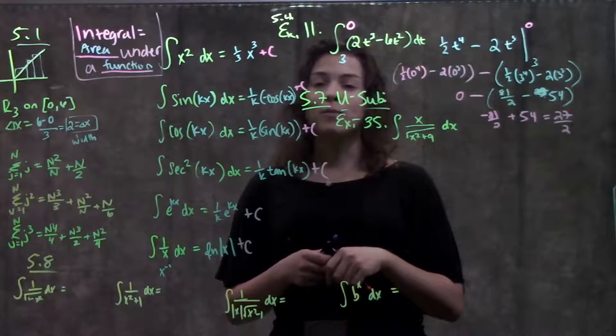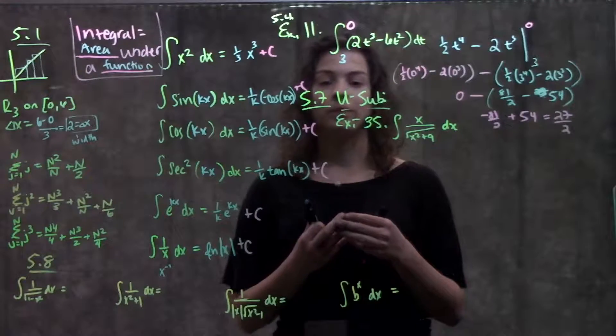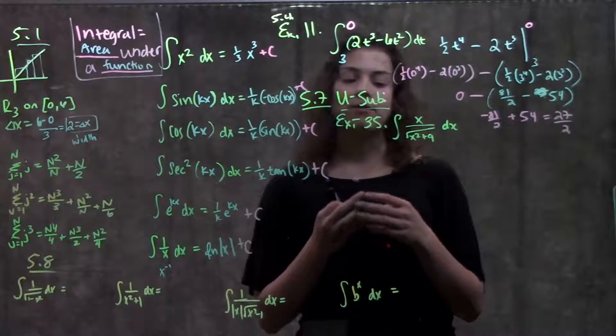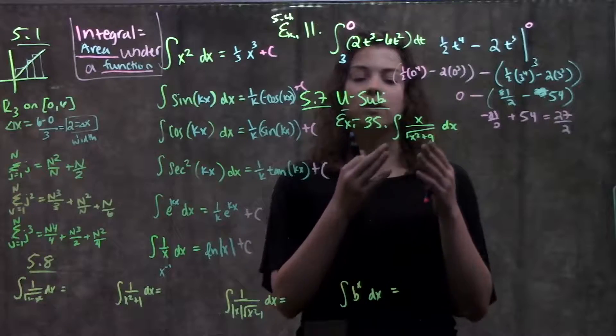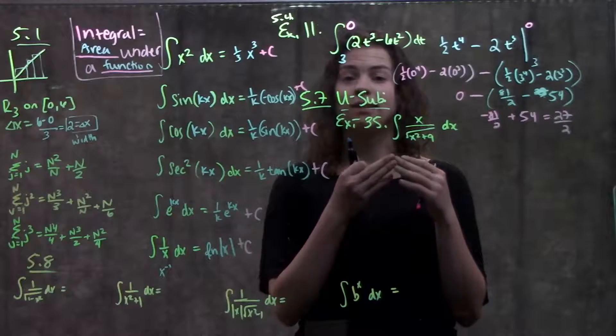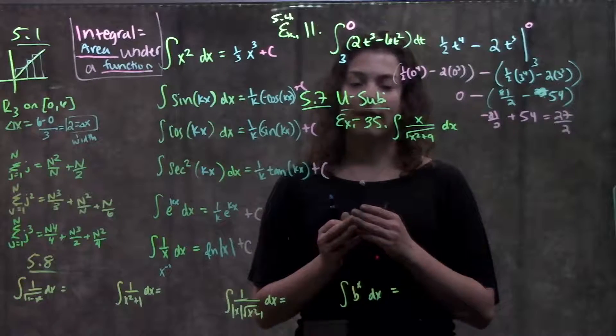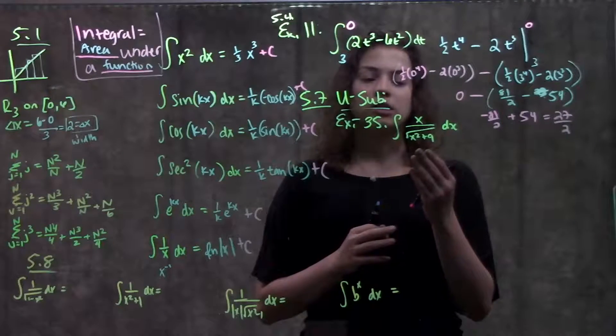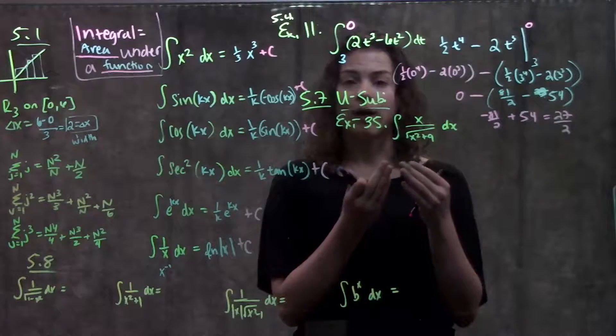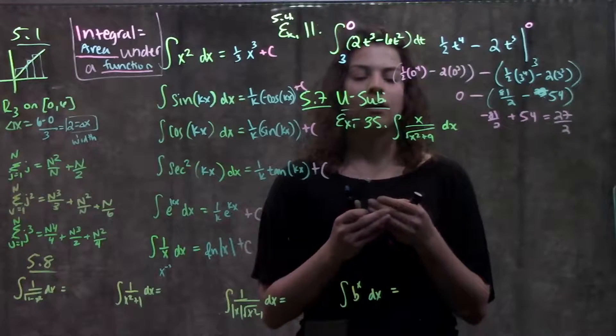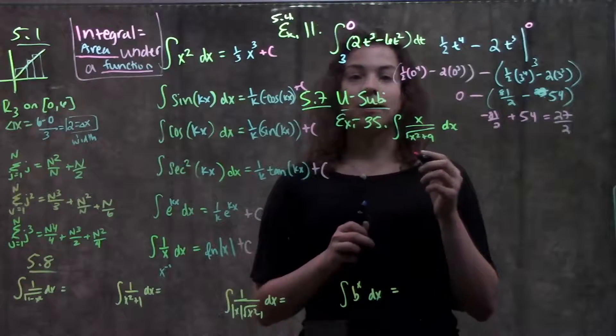For section 5.7, we learned another integral rule. And this is called u sub. We use u sub whenever we have a function within a function to try to simplify things, rewrite it in another way, so that we can get it in a form where we know how to take the integral of it. For number 35, for example, in 5.7, we're given this function, and we want to find the integral. Well, looking at how it is now, I don't know how to take the integral of that.